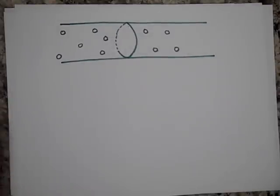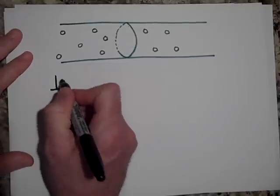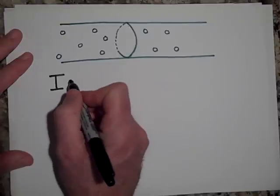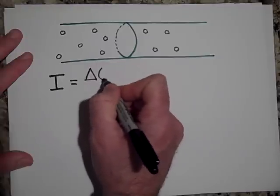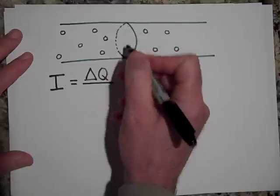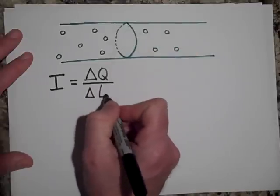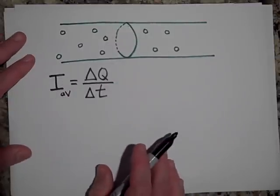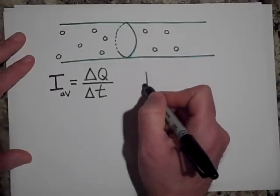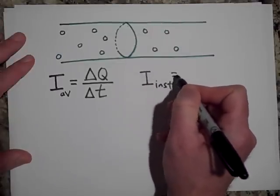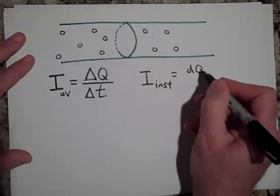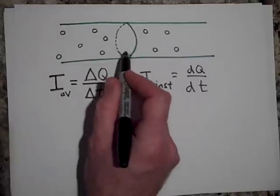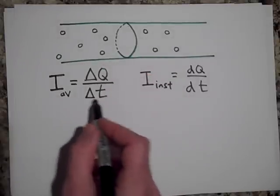In any case, the current is going to be designated with an I, just like last year, and that is going to equal the amount of charge that goes through a cross-sectional area per given time. That's average current — the amount of charges that actually go past that cross-sectional area. We also have an instantaneous current, and that would be dq/dt. The numerator is the amount of charge that passes through the cross-sectional area in a given time t.